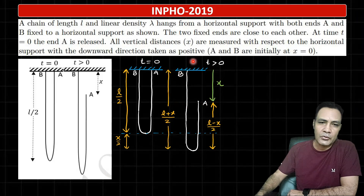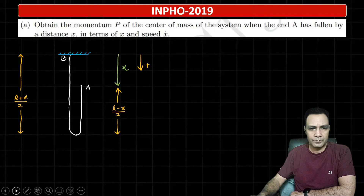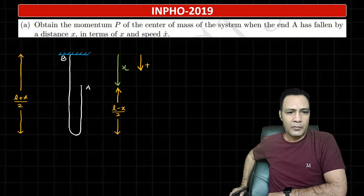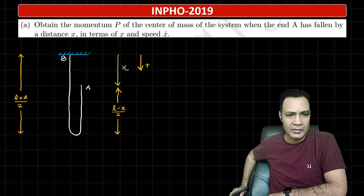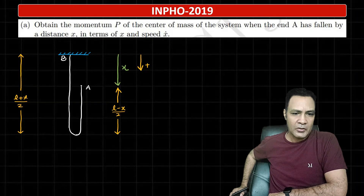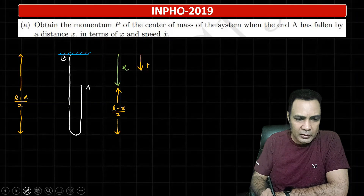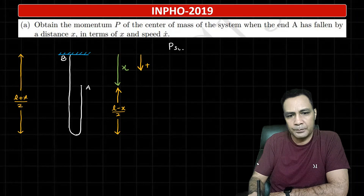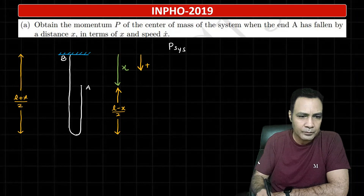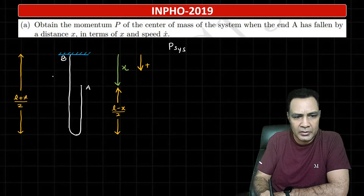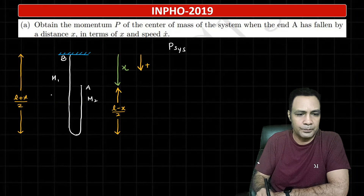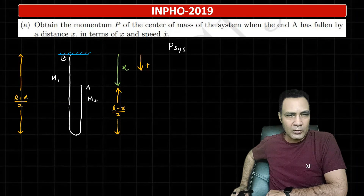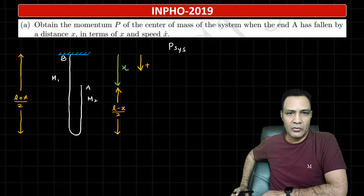Now I proceed to the parts of the question one by one. In part A, they ask for the momentum of the center of mass of the system when end A has fallen by a distance x, in terms of x and speed ẋ. Basically they want the momentum of the whole system. It is given that the downward direction is positive. The left side of the chain has mass m₁ and the right side has mass m₂.